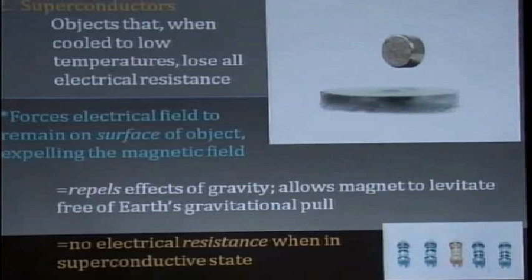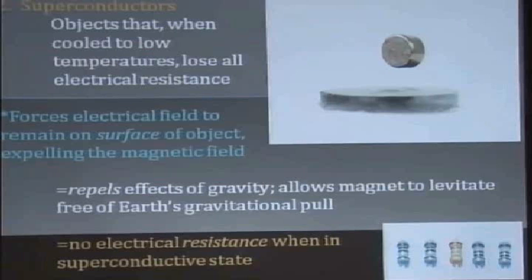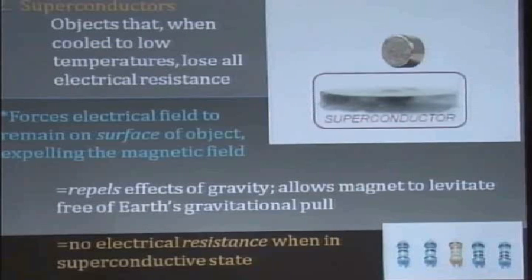So these are objects that when they are cooled down to a critical temperature, they exhibit a phenomenal characteristic. They will basically repel a gravity field. They lose all electrical resistance. And when that happens, the electrical field will stay outside the object on the surface. And that makes gravity actually get repelled. So in this image, you can see the superconductor at the bottom. And it looks frosty because it has to be cooled down really, really low. And then we have a magnet levitating up above it.